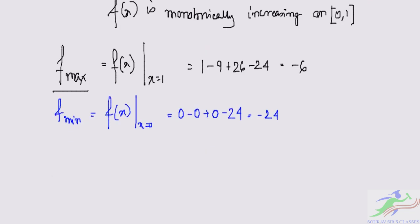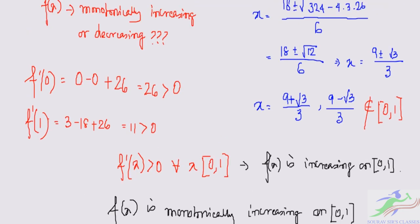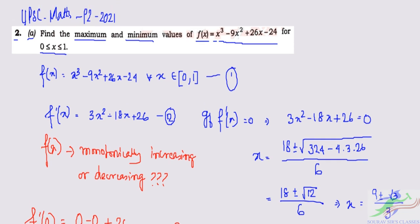So f_min=-24 and f_max=-6. Maximum value is -6, minimum value is -24. That is the answer for question 2a.